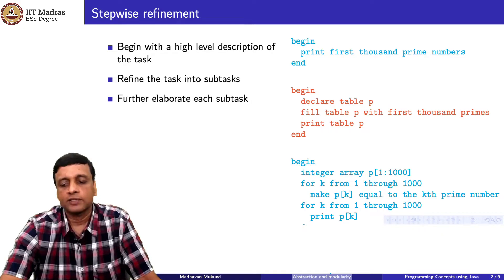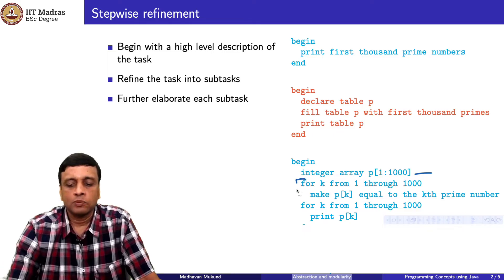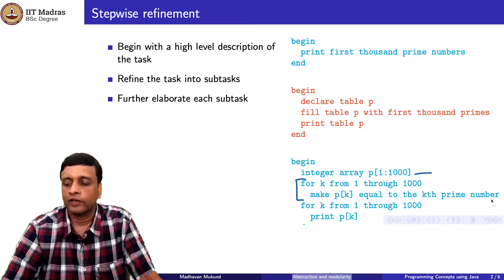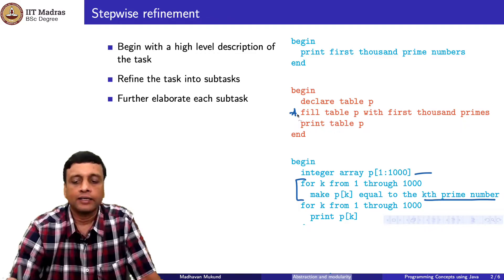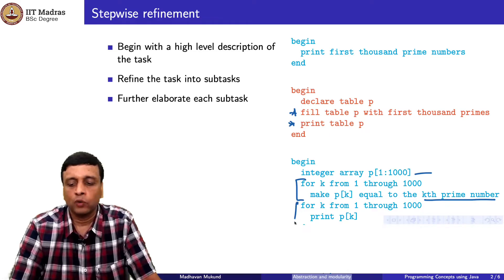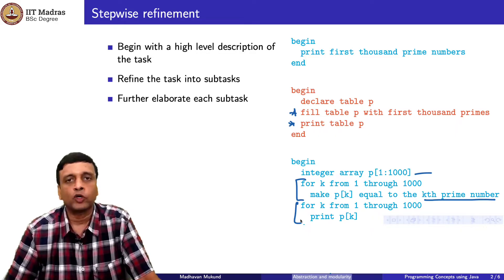We can go one more step and elaborate further: declare the table as an array of 1000 integers, then write an explicit loop to populate it. This is still abstract because we still have to figure out how to calculate the kth prime number, but it is more concrete — it tells us that filling the table can be achieved through a loop. Similarly, printing the table can be achieved by a loop which prints it one by one. At each step we make the tasks more and more concrete until we get down to something we can actually run.